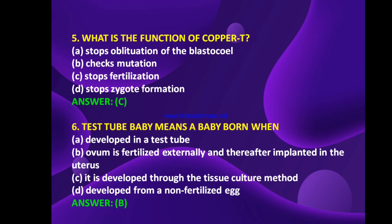Next question: what is the function of Copper T? Options: stops obliteration of blastocyst, checks mutation, stops fertilization, or stops zygote formation? The answer is C — stops fertilization.